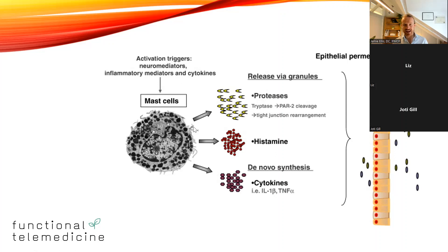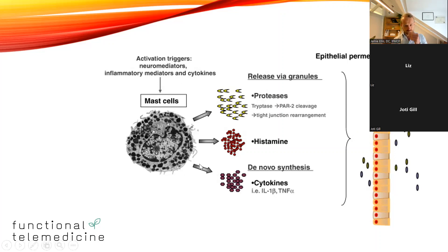If the mast cell gets activated for whatever reason, it can release histamine. Histamine is what's involved in the typical allergic response — itching, swelling, respiratory difficulty, and the typical allergic symptoms, which also seem to crop up with MCAS. Not quite as a severe acute reaction as an allergy, but in a similar way. There can be multiple things that can set off the mast cell. But aside from histamine, the mast cell actually releases way more things — histamine is just one small player within the whole cascade.